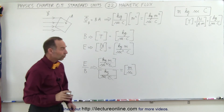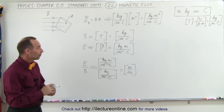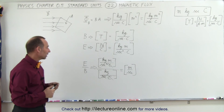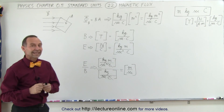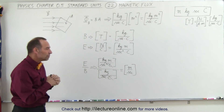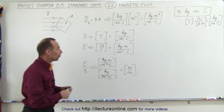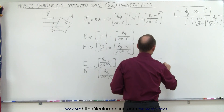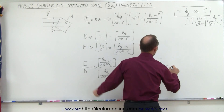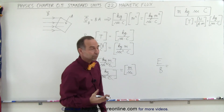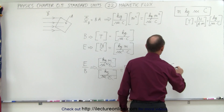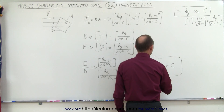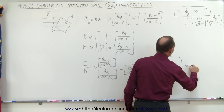The units of meters per second are the units for velocity. This means that the ratio of the strength of the electric field divided by the strength of the magnetic field equals, in units, meters per second — or velocity. Since those fields move through space at the speed of light, this concludes that the ratio of the electric field divided by the magnetic field is equal to the speed of light.